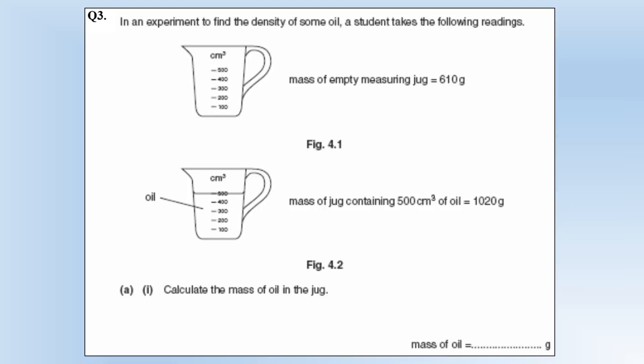Okay so in an experiment to find the density of some oil a student takes the following readings. The mass of an empty measuring jug 610. Mass of a jug containing 500 centimeters cubed of oil 1020. Okay calculate the mass of oil well we just need to find the difference between those which is clearly 410 grams.